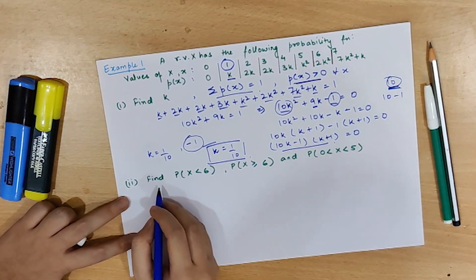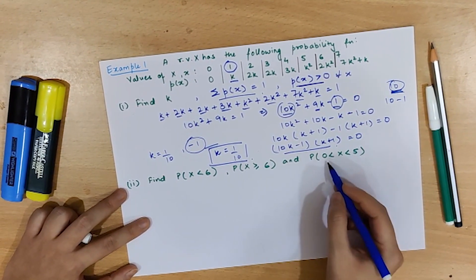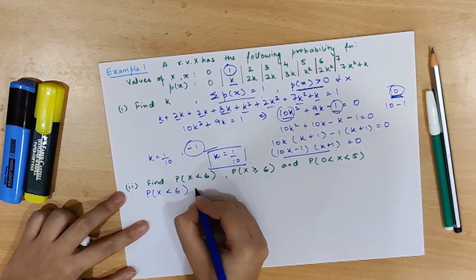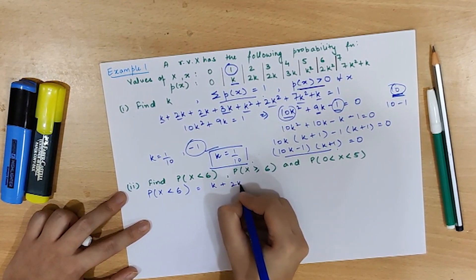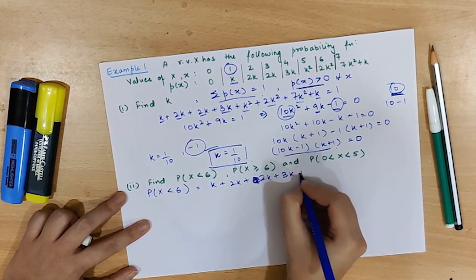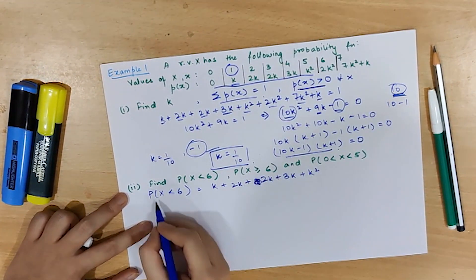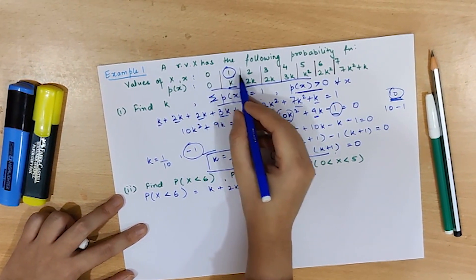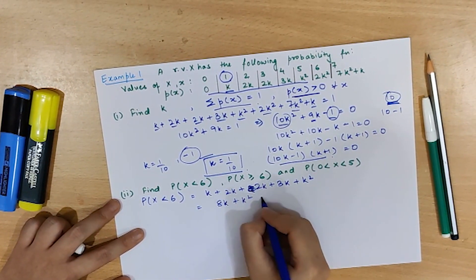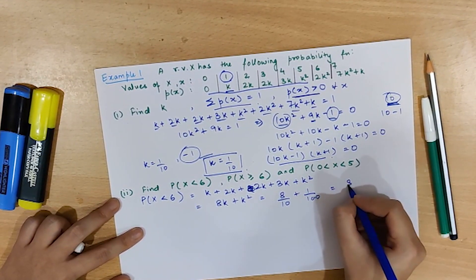Let's move on to the second part of the question: finding P(x < 6). For P(x < 6), we take probabilities for x = 0, 1, 2, 3, 4, and 5, giving us k + 2k + 2k + 3k + k². This equals 8k + k², which is 8/10 + 1/100 = 81/100.